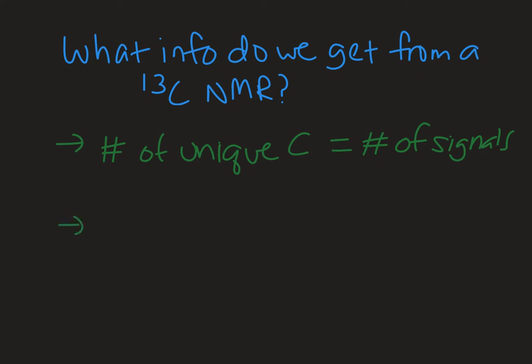The other piece of information we get is the type of carbon or the type of neighbor, and that is from the chemical shift, so where the signal shows up on the spectrum.